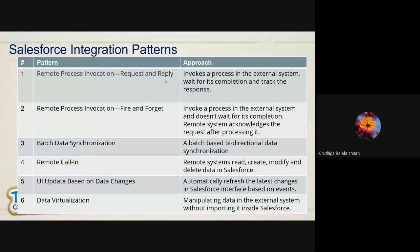The first pattern is Remote Process Invocation — Request and Reply, where Salesforce invokes a process in the external system and waits for its completion to track the response. The second pattern is Fire and Forget, which is similar except Salesforce invokes a process in the external system and doesn't wait for its completion. The remote system may acknowledge the request after processing it, and Salesforce may keep sending requests to check the status.